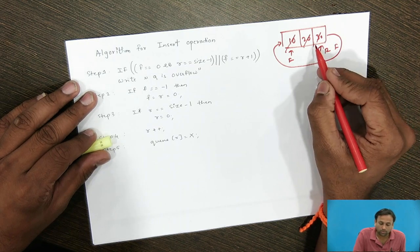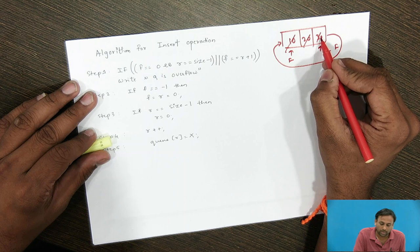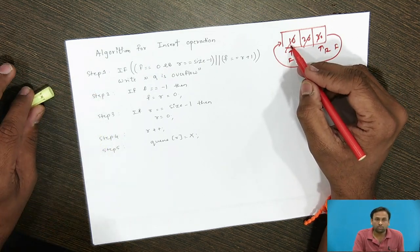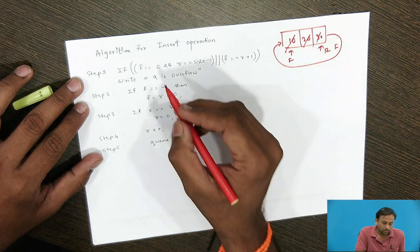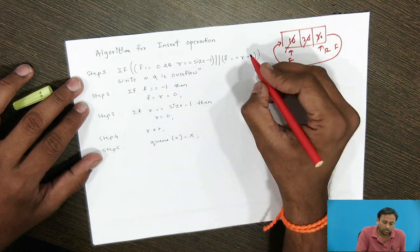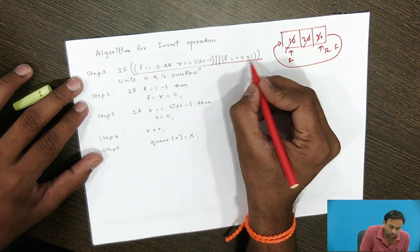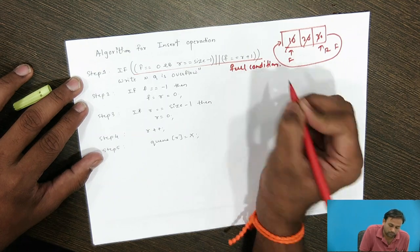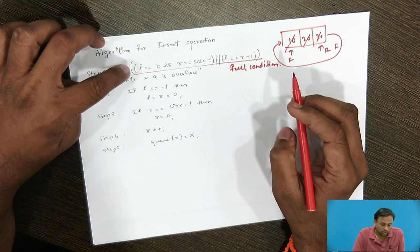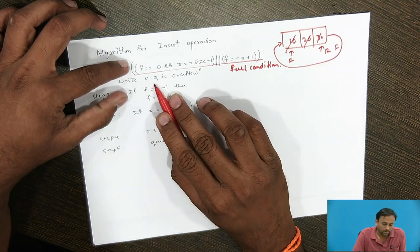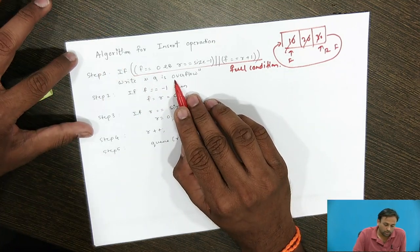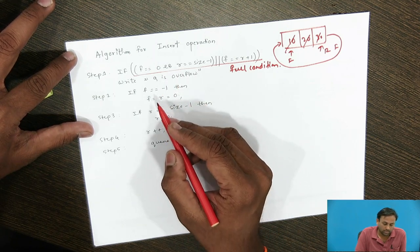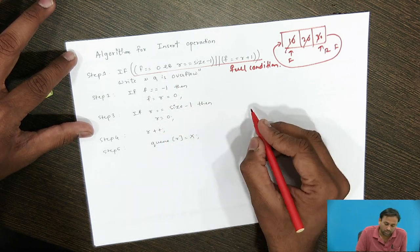Logically we connect the last end to the first end. Now we will look at the algorithm for insert operation. This is the condition to check if the queue is full — the full condition. If this condition occurs, we print queue is overflow. If it does not occur, we proceed to the next step.